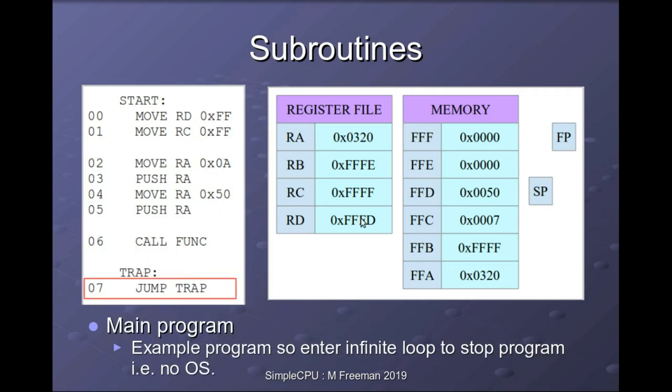After the return instruction, the next instruction fetched is from address 7, and in this example it enters an infinite loop. Some points to note: how the stack is implemented depends on the processor architecture. In this example the stack grows down from the top of memory — the stack pointer is decremented on every push and incremented on every pop. There's no reason why the stack can't grow upward from address 0 instead. For Simple CPU version 1d, since the first instruction is always at address 0, it makes sense to put the stack at the top of memory.